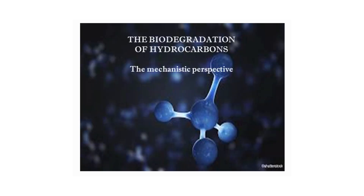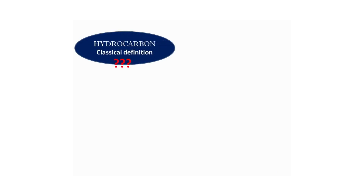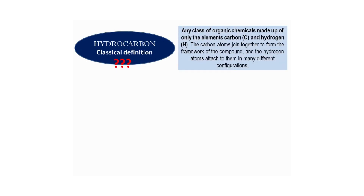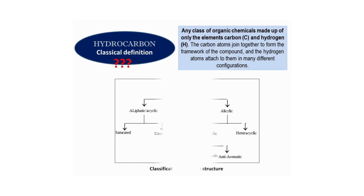In this video we are going to talk about the biodegradation of hydrocarbons from a mechanistic perspective. Coming to the definition of hydrocarbons: according to the classical definition, these are any class of organic chemicals made up of only the elements carbon and hydrogen. The carbon atoms join together to form the framework of the compound and the hydrogen atoms are attached to them.